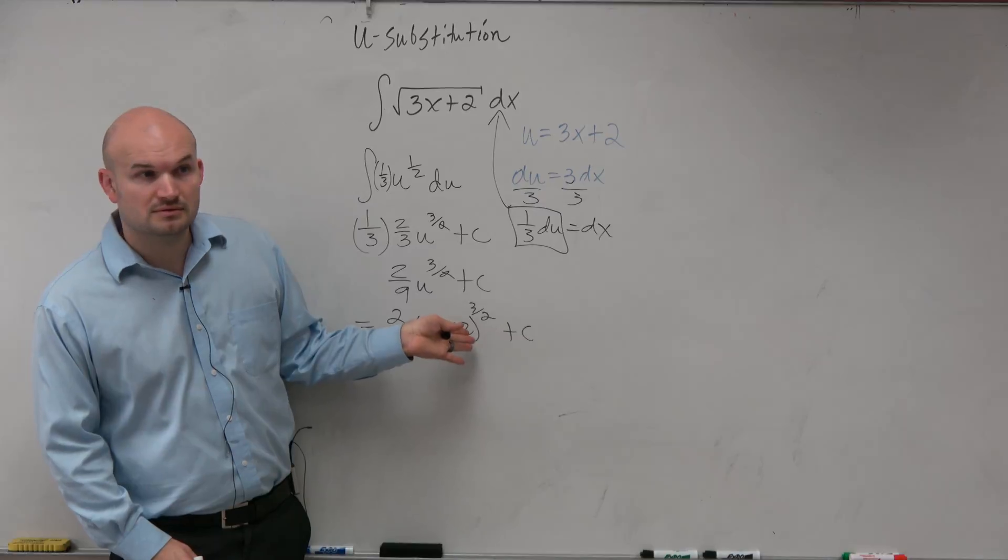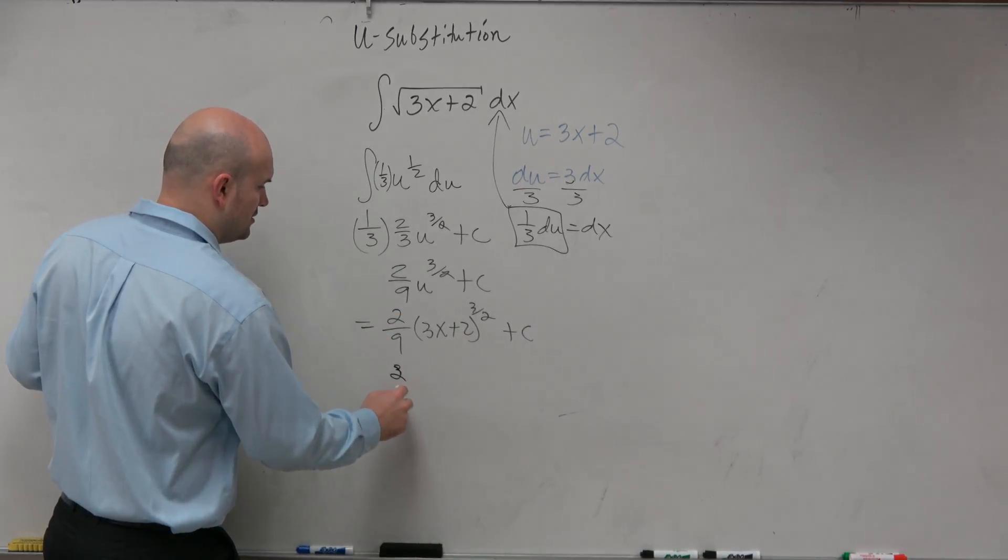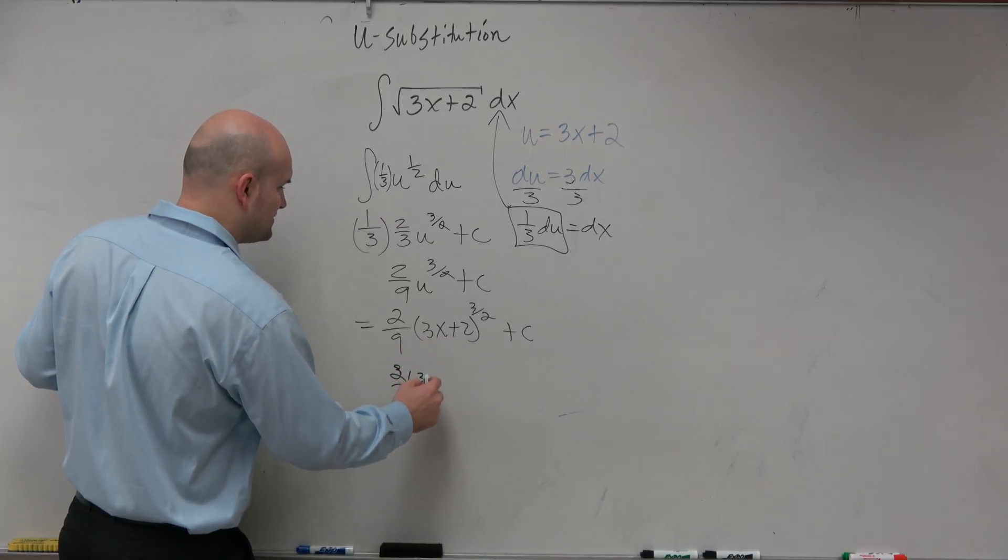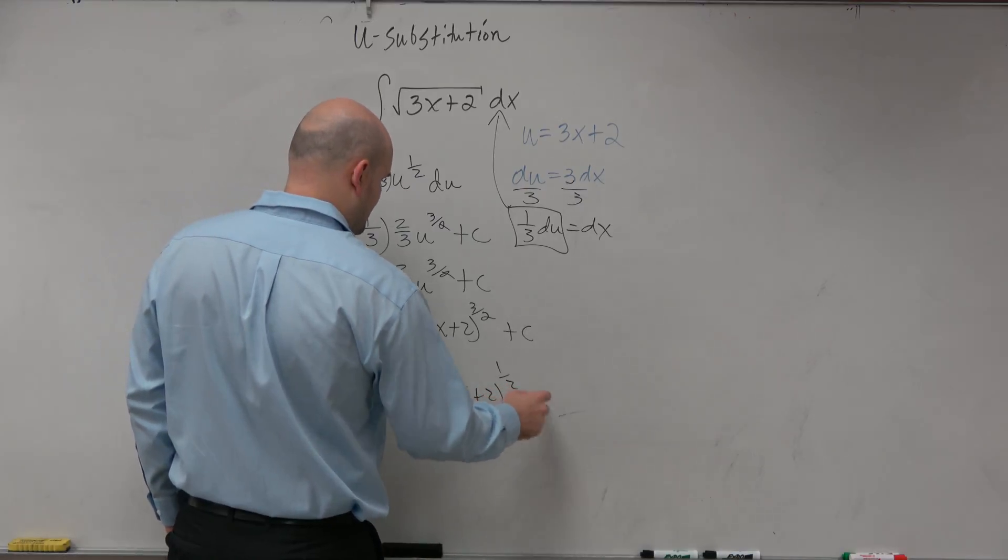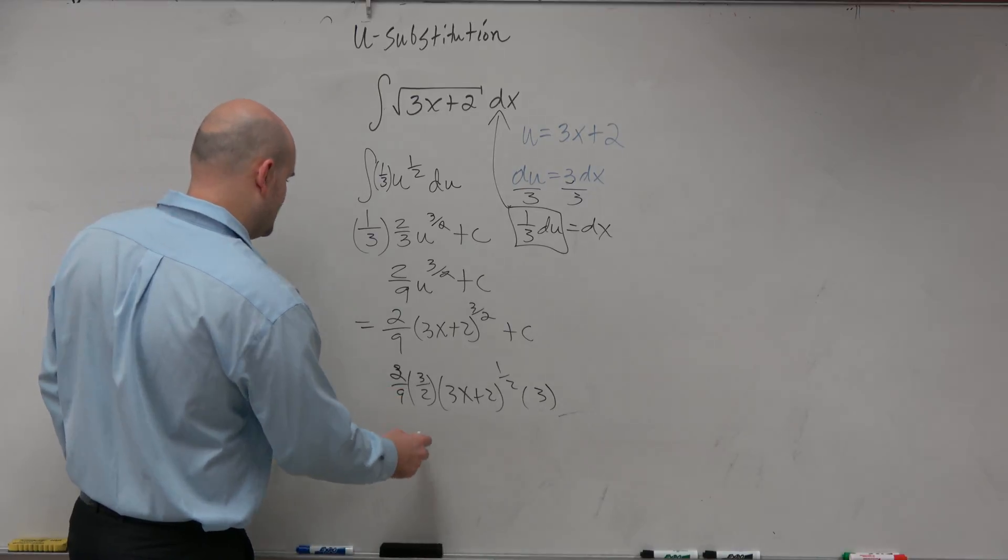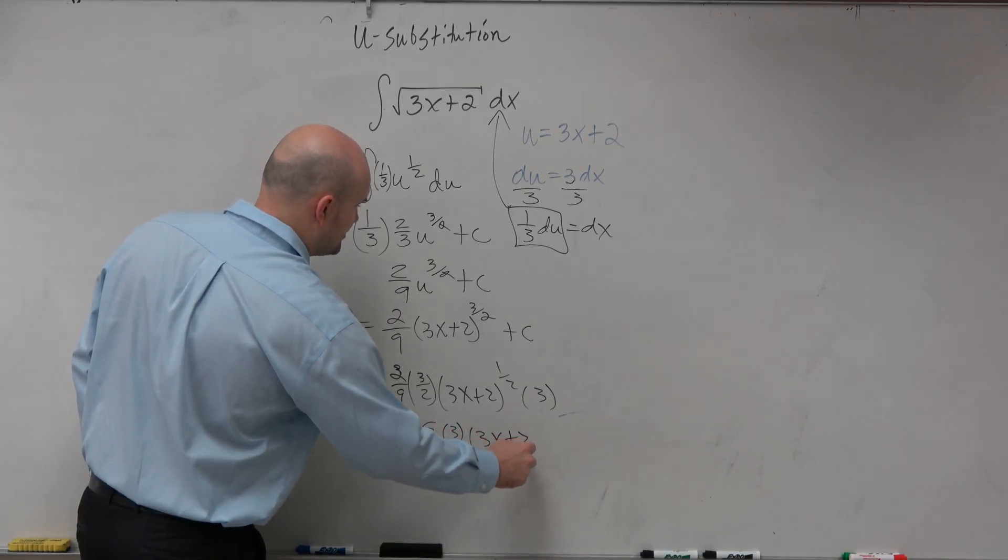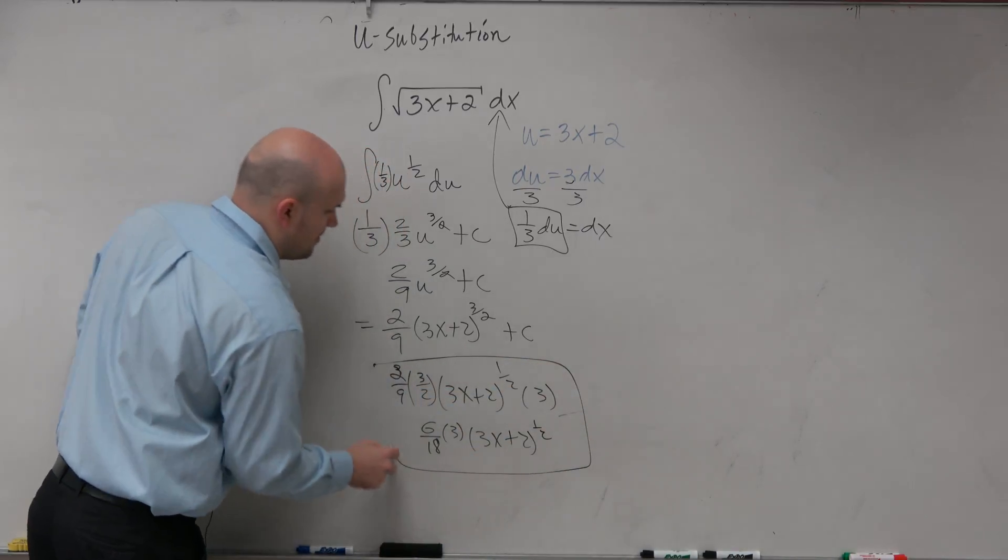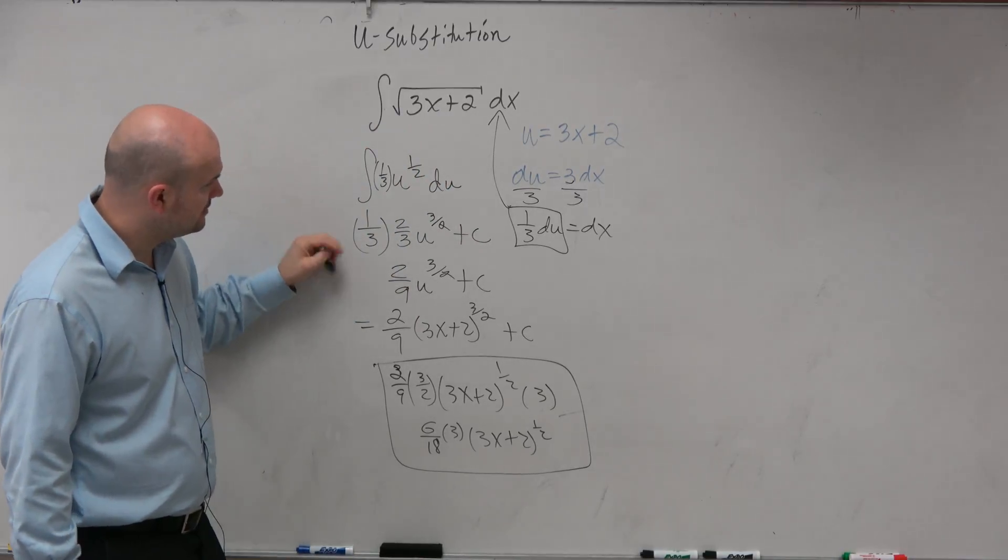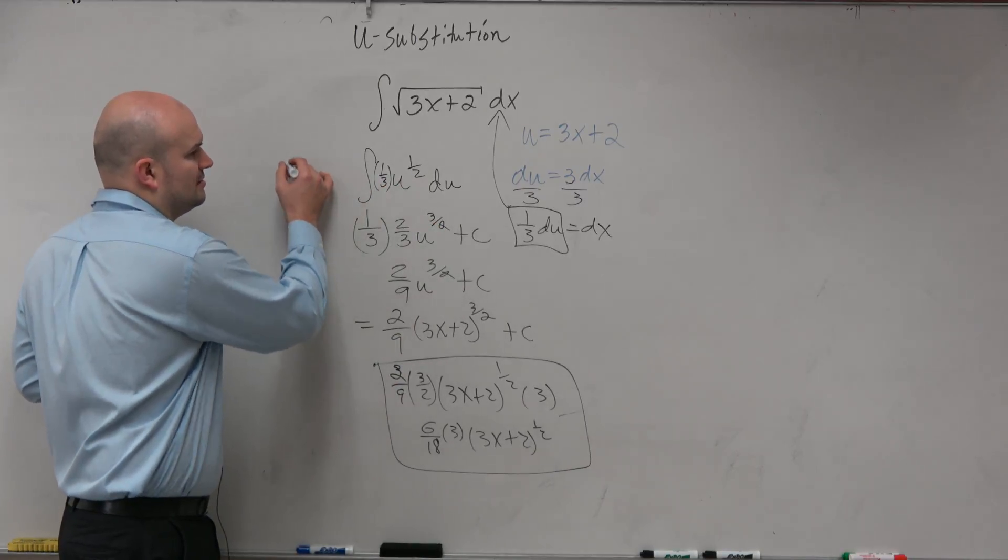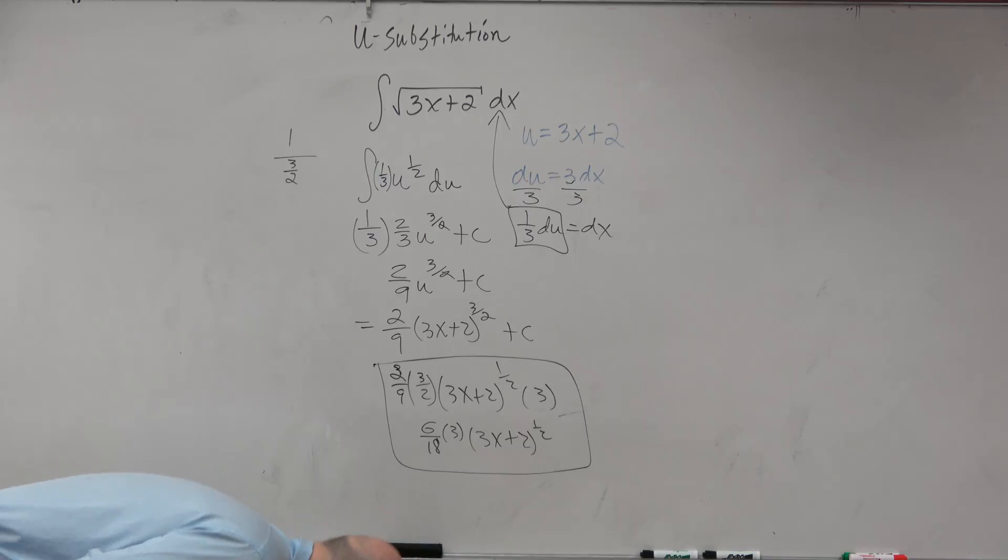Could we also just check our answer, though, by taking the derivative to make sure we're correct? If we're kind of a little bit fuzzy and you're like, did I actually do that correctly? So why don't we just kind of check our answer? 2/9 times, bring down 3/2, subtract the 1. So that's 3x plus 2 to the 1/2 power, and then times the derivative of the inside, which would be times 3. And let's see, we get 6 over 18 times 3, which would be 18 over 18, times 3x plus 2 to the 1/2 power. And obviously, this would give you 18 over 18, which would be 1, and then 3x plus 2 to the 1/2 power would be the square root. The 2/3. I remember it's 1 over 3/2, so I just multiply by the reciprocal.